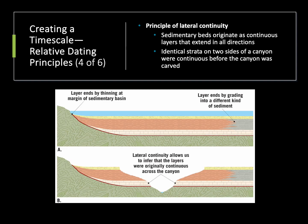Our third principle is the principle of lateral continuity. This tells us that horizontal layers continue until they eventually thin out along the sides. So if we're looking at an area like a canyon or a stream bed, if we see matching rocks on either side of that stream bed, they were originally connected. But the water has carved its way or eroded its way into those rocks, breaking them up over geologic history.